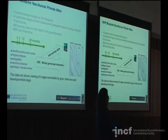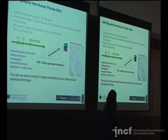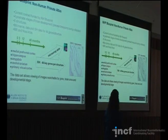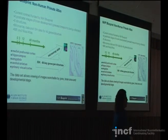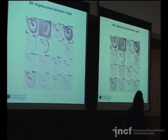The microarray looks at the regions of interest that have been further annotated. So you'll be looking at different nuclei within the amygdala, for instance, or different layers of the cerebral cortex.